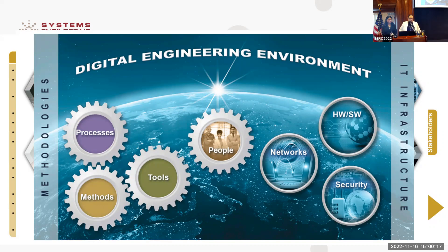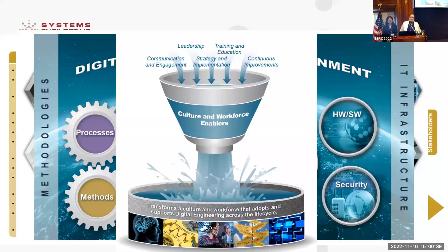The fourth goal is about the environment — the ecosystem. Underlying all of this is the idea that you have to have not only the data, but the tools, software, processes, approaches, and people who can pull it all together in a meaningful way. The fifth goal is about changing the culture and changing the workforce so that they can actually do digital engineering and enable transformation in an appropriate way.